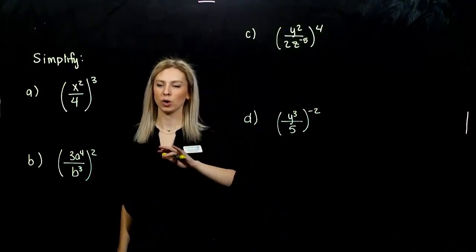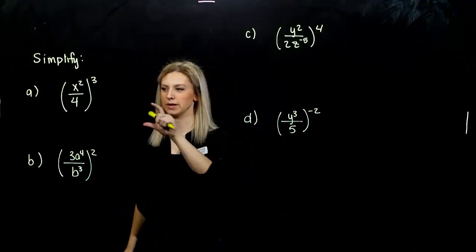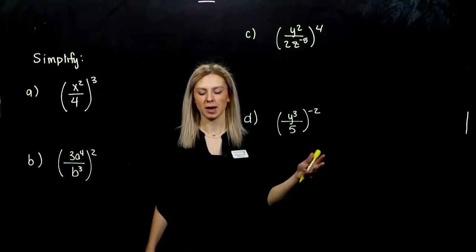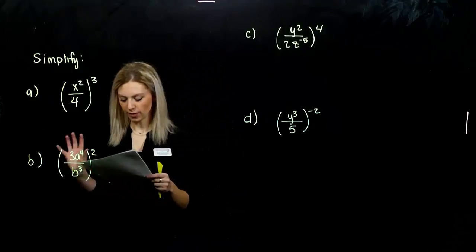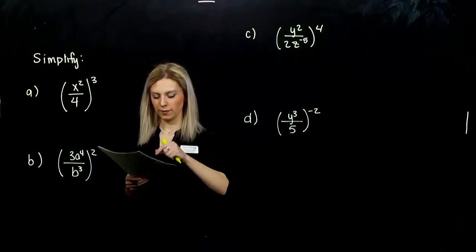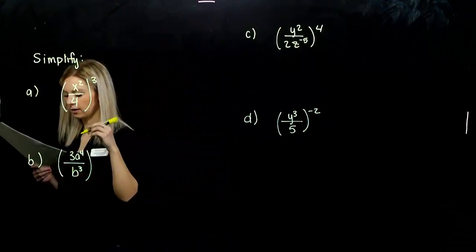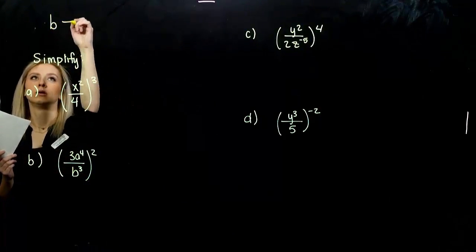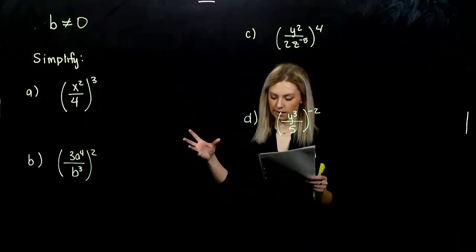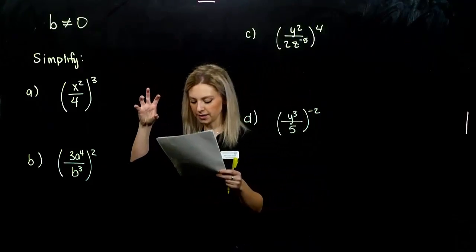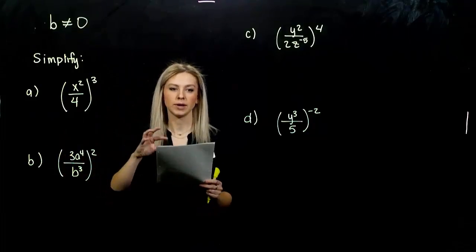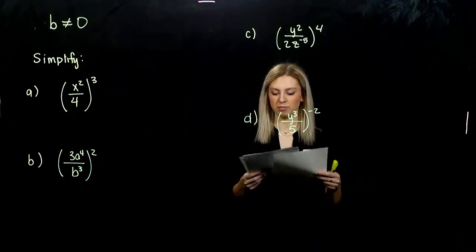We've seen distributing a power over a product. Now we're going to look at distributing a power over a quotient — over a fraction. For any real numbers A and B, with fractions, the denominator cannot be equal to zero; it can never divide by zero. If I have a power on the outside, I give it to the top and I give it to the bottom. And if there are products involved, we have to distribute to every single term.